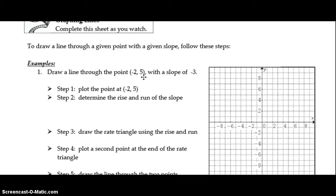Draw a line through the point (-2, 5), which has a slope of -3. We're going to start with step 1 by plotting a point at (-2, 5). So we go across the x-axis to -2, up the y-axis to positive 5, and plot our point there.